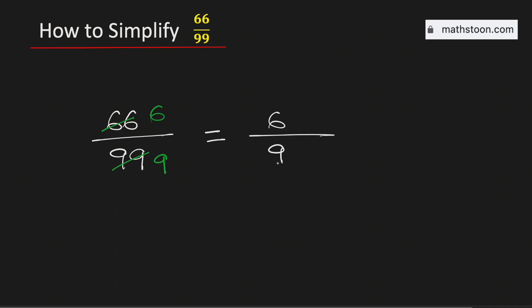See that both the numbers are divisible by 3. If we divide 6 by 3 we get 2. If we divide 9 by 3 we get 3. So it is equal to 2 over 3.